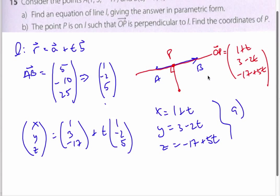If I want OP to be perpendicular to L, well, L is defined by this vector here, the direction vector. So if I make AB, my direction vector, perpendicular to OP,